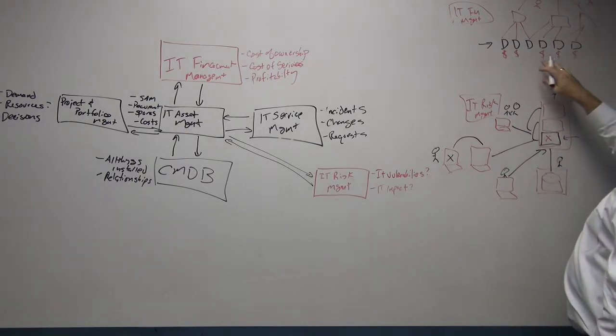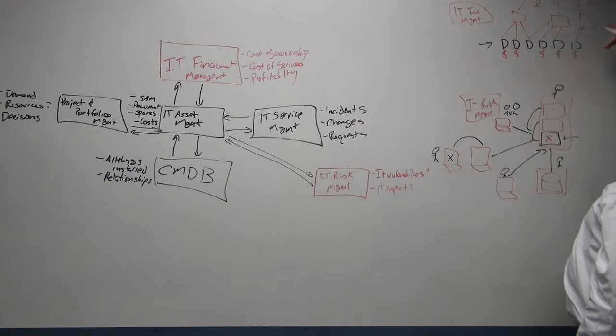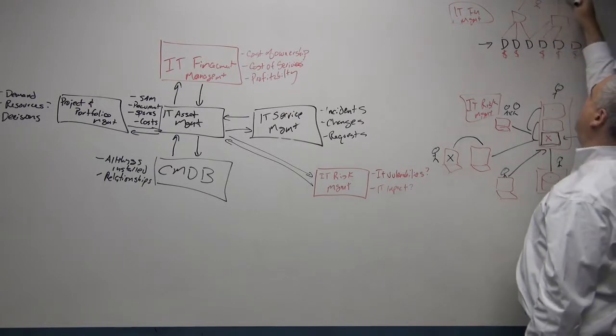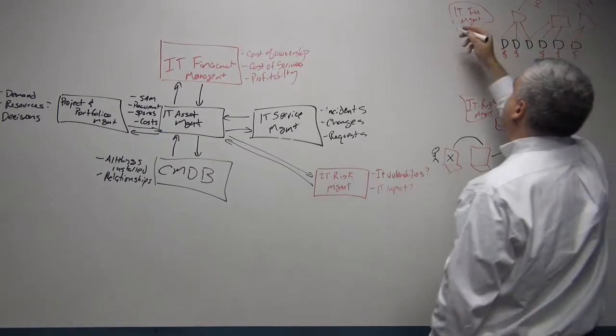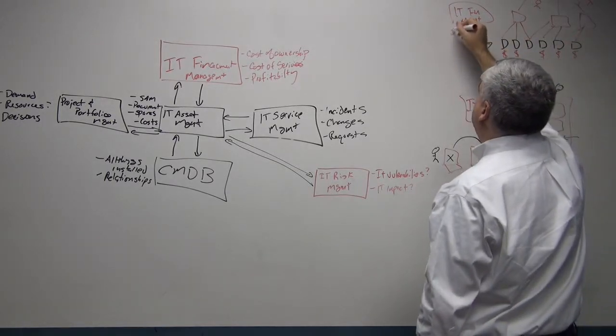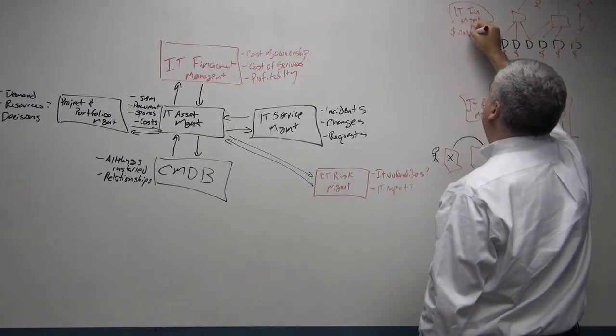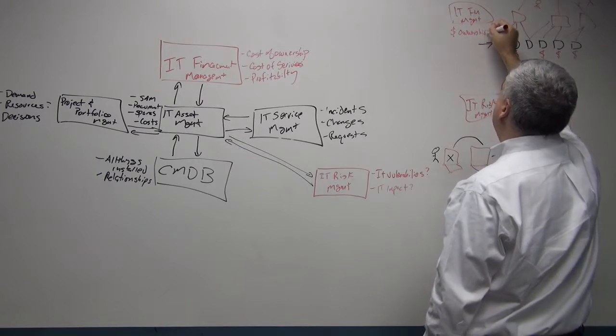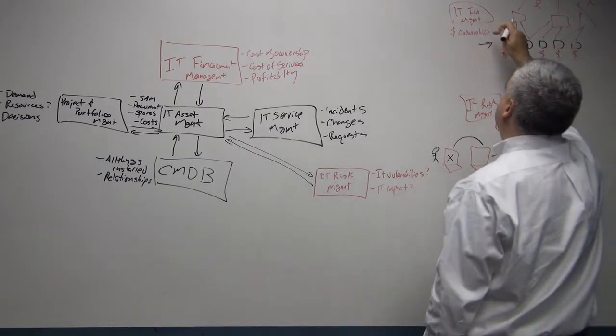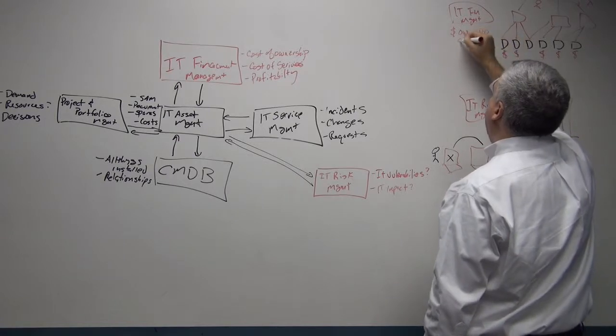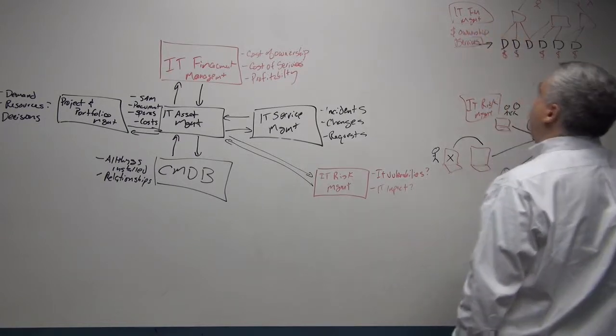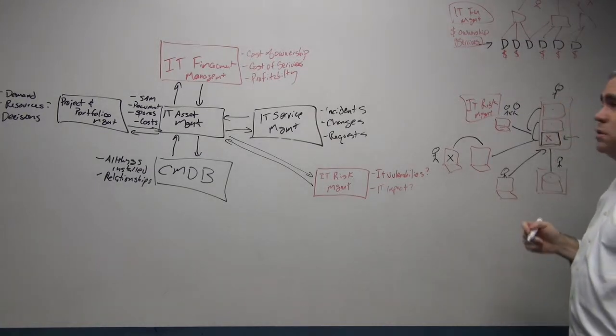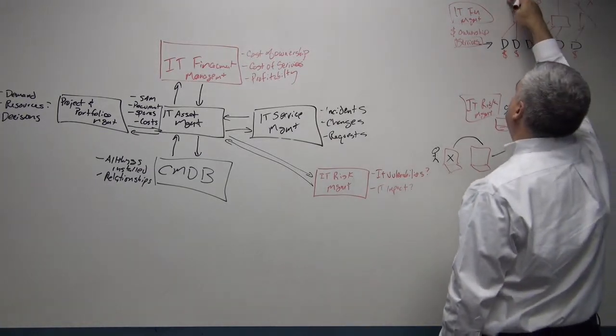Understanding how the costs of these individual items roll up through the application layer to the customer-facing business services is extremely important to IT financial management. Because it helps us understand cost of ownership for our items, which is very important. But more importantly, it helps us understand the cost of ownership of services.